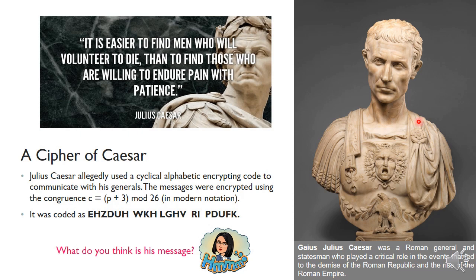This is Gaius Julius Caesar, a Roman general and statesman who played a critical role in the events that led to the demise of the Roman Republic and the rise of the Roman Empire. Julius Caesar allegedly used a cyclical alphabetic encrypting code to communicate with his generals. The messages were encrypted using the congruence C congruent to P plus 3 mod 26 in modern notation. This was the code sent to his general. What do you think is his message? We're going to tackle this one and know what is the message that Julius Caesar sent to his general.